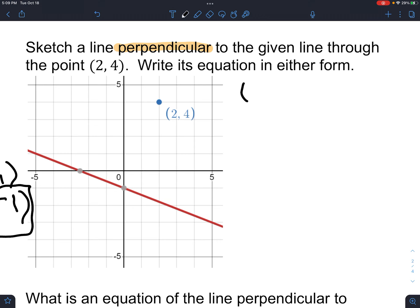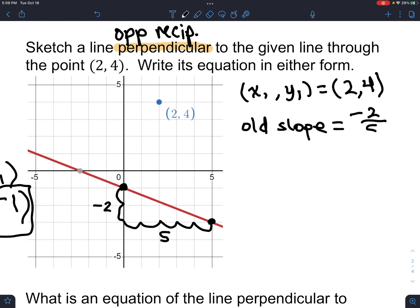Sketch a line perpendicular to the given line through the given point. So, again, we got the given point. We know that perpendicular means opposite reciprocal slopes flip and flip. So, if I find the slope of this line which is going to be down 2 over 5, the slope of my existing line the old line is negative 2 over 5 and I know because of the notes that the new slope of my new line is going to be 5 over 2.